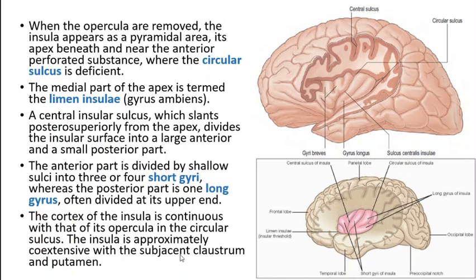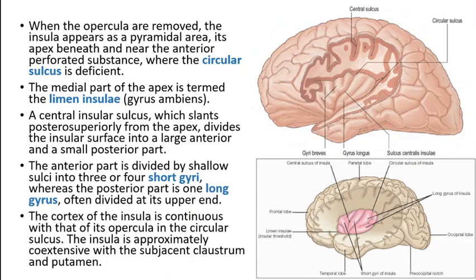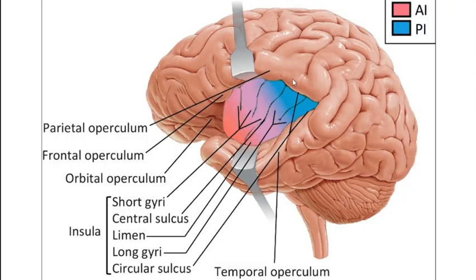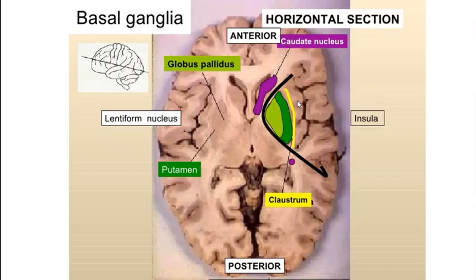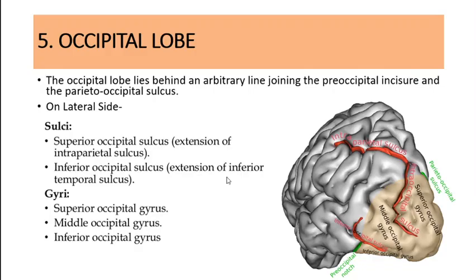The insula is approximately co-extensive with the subjacent claustrum and putamen. In a transverse or coronal section, you can identify these structures. The claustrum is a subcortical collection of gray matter — like the basal nuclei — internal to the insular gray matter. It is a thin sheet of gray matter lying deep to the insula, and since they are functionally associated with each other, the term co-extensive is used.